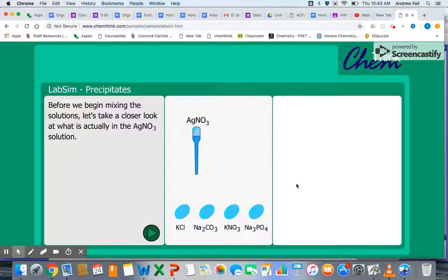In this case we're going to look at a precipitation reaction and describe what's initially present as reactants and what's present as products and how we can actually describe those more accurately through net ionic equations. So first let's take a look at what's inside the silver nitrate solution.